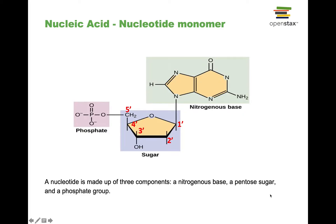The individual monomer for a nucleic acid is a nucleotide. In order to really understand the structure and function of nucleic acids, it is important to understand what a nucleotide is made of. A nucleotide has three important parts: a 5-carbon sugar, a phosphate functional group, and what's called a nitrogenous base, which basically means it is a basic functional group that has a lot of nitrogens.